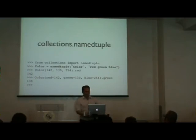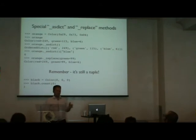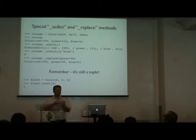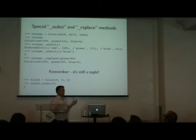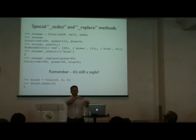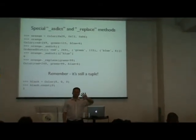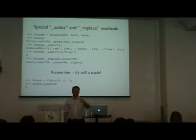The named tuple API uses leading underscores for its own special methods like _asdict() and _replace(). This is because the API says you can use any variable names you want as field names, as long as they don't start with an underscore and aren't Python reserved words. Raymond needed to reserve the underscore namespace for internal methods like converting to a dictionary or making a new object with some fields changed.